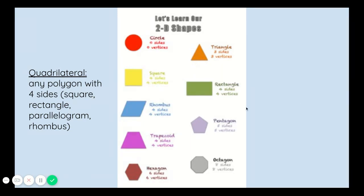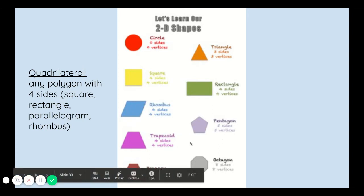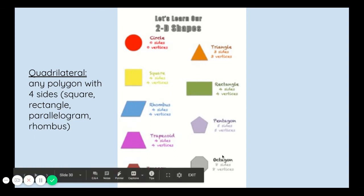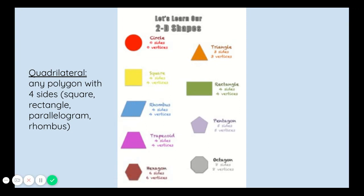Some new shapes we learned this year are a rhombus, a pentagon which has five sides and five vertices, a trapezoid which has four sides and four vertices, an octagon which has eight sides and eight vertices, and a hexagon which has six sides and six vertices.